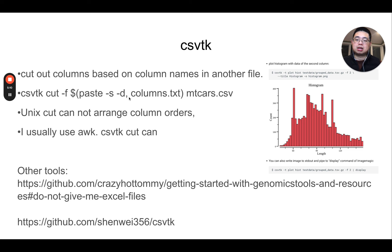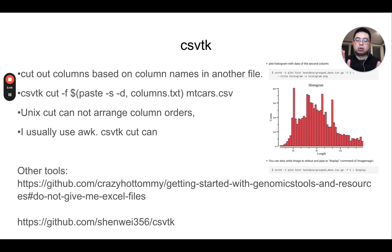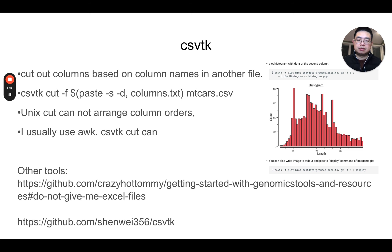Essentially, paste -s -d comma takes a file with one column name per row and converts it into a comma-delimited stream, which you feed into CSVTK to cut out the columns you want. Also, the native Unix cut command cannot reorder column order — cut -f 1,2 and -f 2,1 produce the same result. However, with csvtk cut, if you specify columns as 2,1, it will put the second column in front of the first. So it's very powerful.